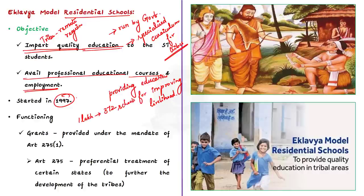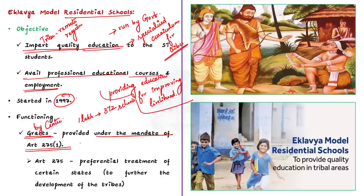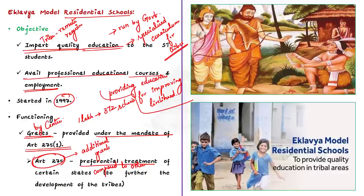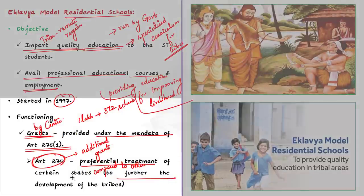The grants for the development of infrastructure of these schools are provided by the central government under Article 275 of the Indian Constitution. Article 275 provides for preferential treatment of certain states over others for receiving additional grants from the center. States with tribal populations and those containing scheduled areas are entitled to additional revenue to further the development of the tribes.